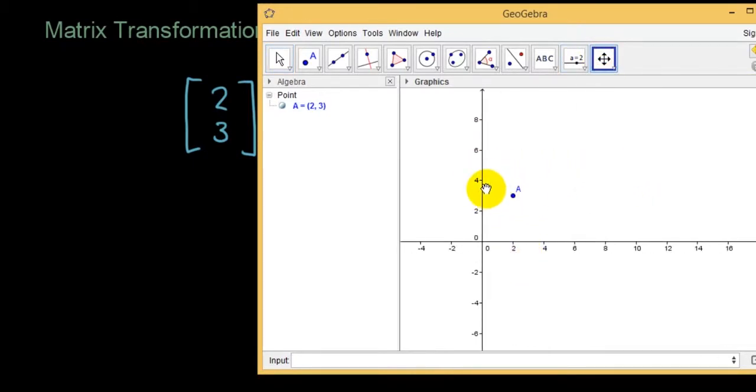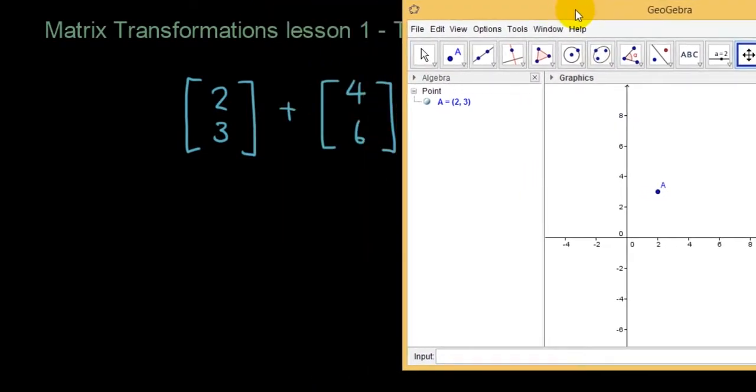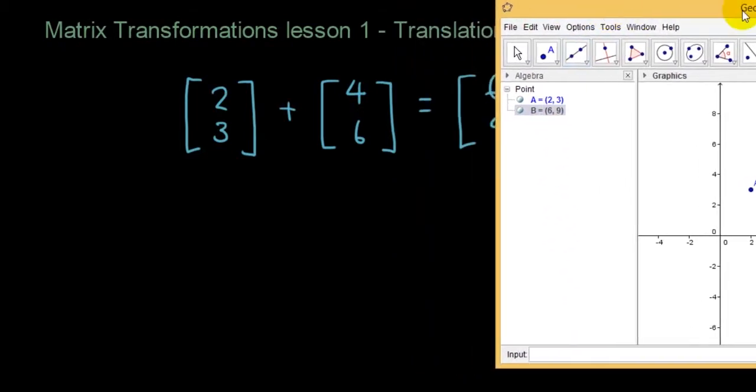X is 2, Y is 3. And what I'm going to do is I'm going to now add point A to another point which is 4 and 6. So I'm going to go point A plus bracket 4 comma 6 and I'm going to see what happens. And it's giving me another point at 6 and 9 which is the answer.